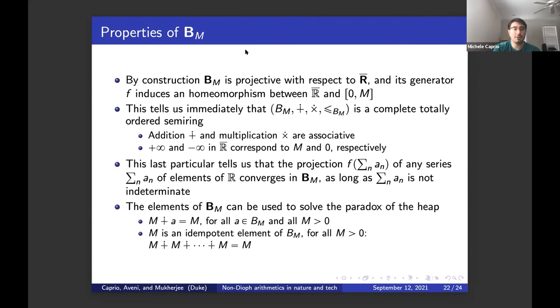As I was saying, by construction B_M is projective and its generator F induces an homeomorphism between the extended reals and [0,M]. If you're not familiar with what homeomorphism is, it's basically an isomorphism between topological spaces. This tells me immediately that the four tuple is a completely totally ordered semi-ring as before, as for A_M. And addition dot plus and multiplication dot times are associative and also plus infinity minus infinity correspond to M and zero respectively. And this last particular is especially important because the projection of any series of elements of R, so of elements of any element, except for plus infinity minus infinity, is going to converge in B_M as long as the series is not indeterminate. That is, if it doesn't oscillate. For example, we couldn't project minus one to the M.